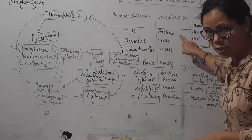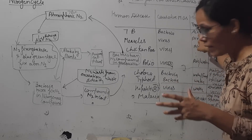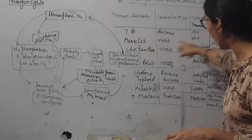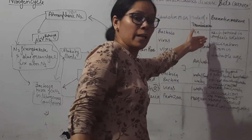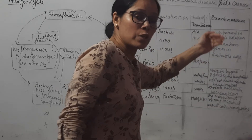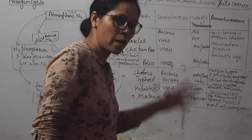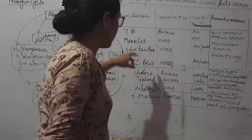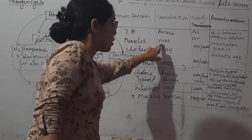The mode of transmission for TB is air. Prevention includes keeping the patient in complete isolation and vaccination given in suitable cases. The second disease is measles, caused by a virus that spreads through the air. Prevention is vaccination given in suitable cases.